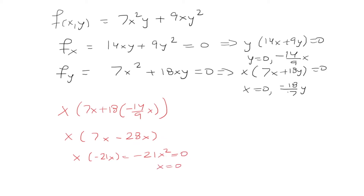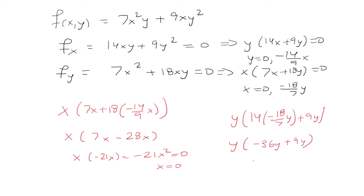We can also plug x = −18/7 · y into the top equation. Working that out: 14/7 is 2, times −18 is −36, so −36 + 9 = −27, giving −27y² = 0. Setting that equal to 0 also gives y = 0. So it's clear that x = 0, y = 0 is the critical point.